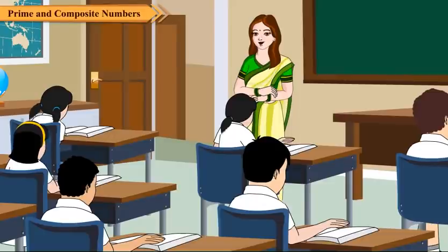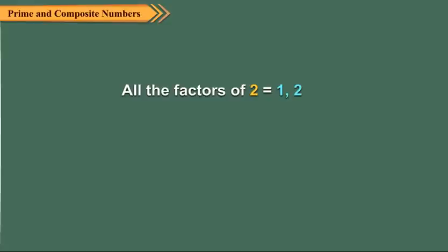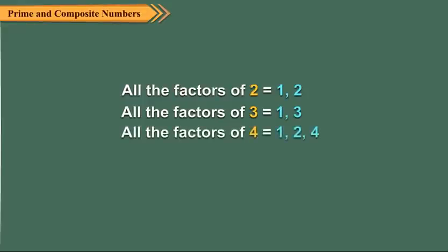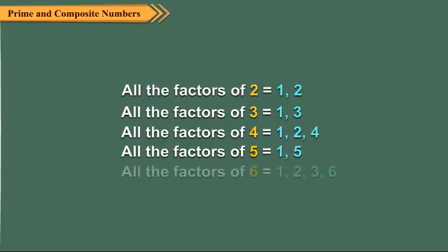Children, observe the following statements here. All the factors of 2 are 1 and 2. All the factors of 3 are 1 and 3. All the factors of 4 are 1, 2 and 4. All the factors of 5 are 1 and 5. All the factors of 6 are 1, 2, 3 and 6.